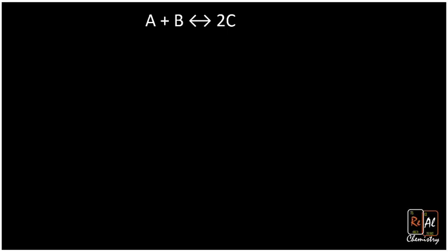First, what is Q? Let's consider this reaction, which is A plus B going to 2C. A and B are reactants, and the product is C.